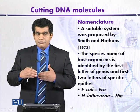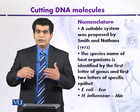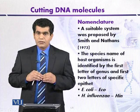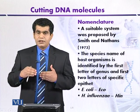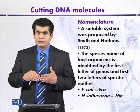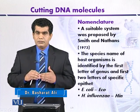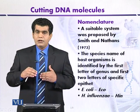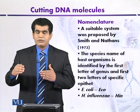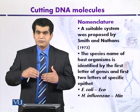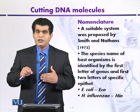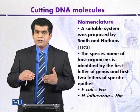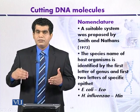One of the first points was that the host organism that produces the restriction enzyme gives its name to that enzyme. For example, if the restriction enzyme is isolated from Escherichia coli, the first letter 'E' is taken from the genus name Escherichia, and the next two letters 'CO' are selected from the specific epithet 'coli.' So the name becomes ECO, meaning the restriction enzyme was isolated from Escherichia coli.